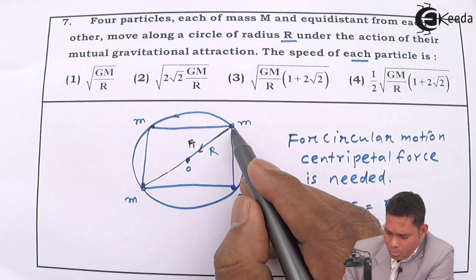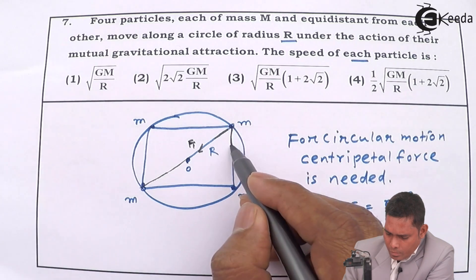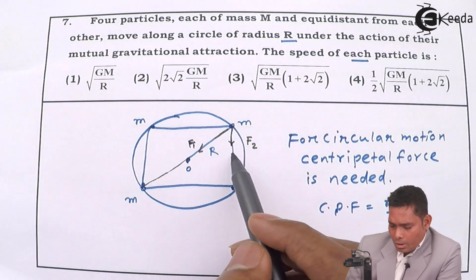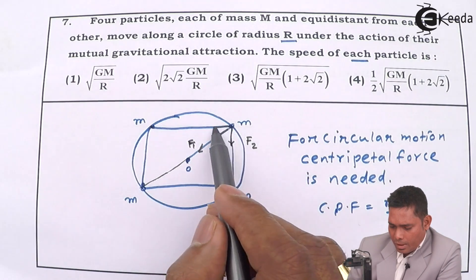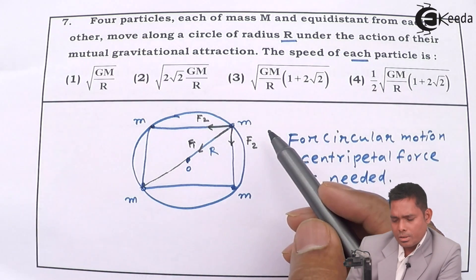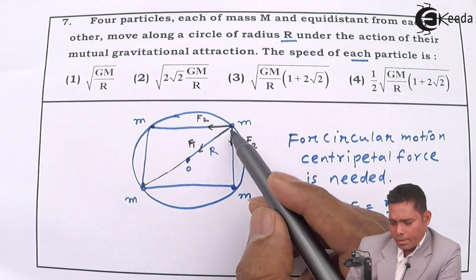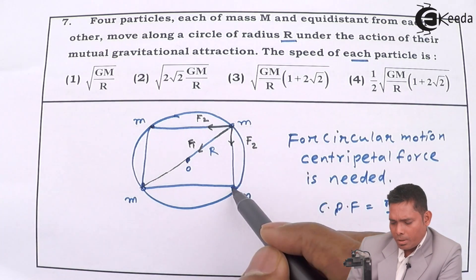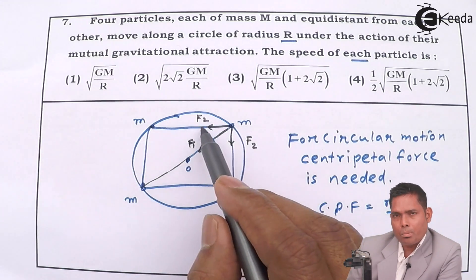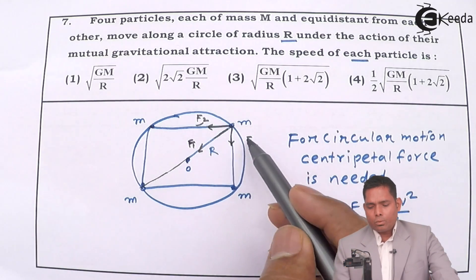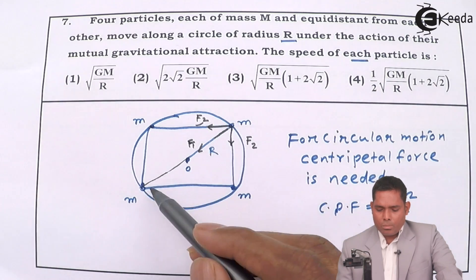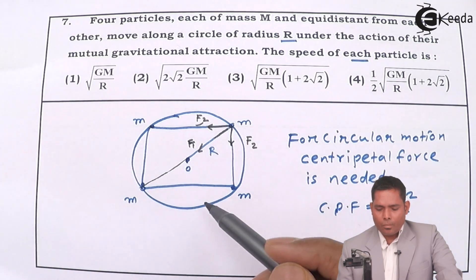This mass will pull this mass along this line with a force I call F2, and this mass will also pull it along this line with a force also F2 in terms of magnitude, because the distances between these two pairs of particles are the same and the masses are also the same. The force F1 is different because the distance of separation is different.